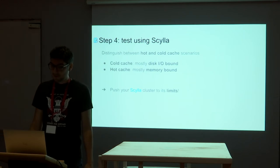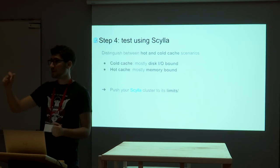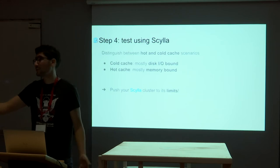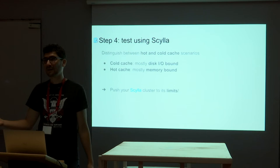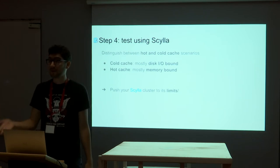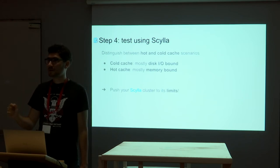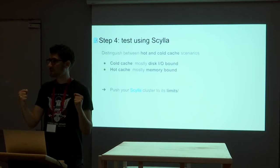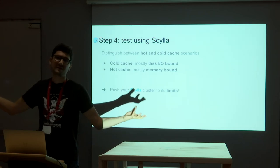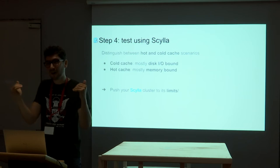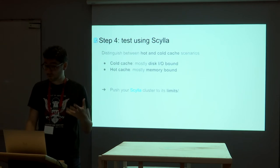When testing using Scylla, you have two scenarios to consider: hot and cold cache. Scylla has a caching mechanism. The first time you run a query you are in a cold cache scenario — it has to go to disk, so it's mostly disk I/O bound. When you run the same query again and the cluster hasn't restarted, you're in the hot cache scenario — it's usually in RAM and you get the answer faster, making it more memory bound. The idea is to try to break Scylla and put enough pressure so it's at 90–100% usage. If Scylla isn't that loaded, the problem is on your client side — you're not pushing enough pressure.